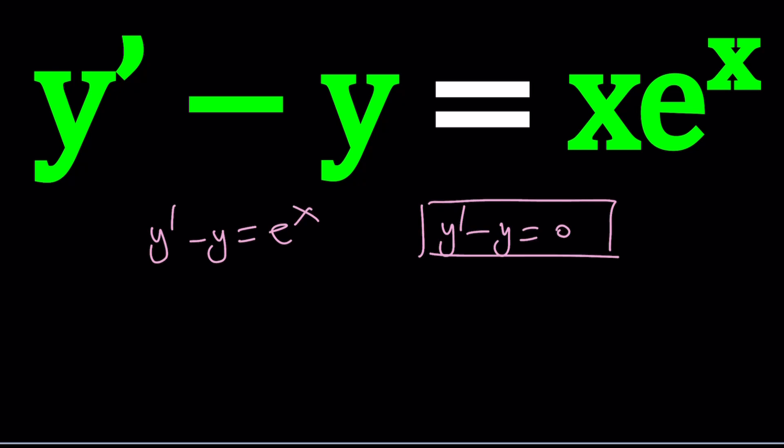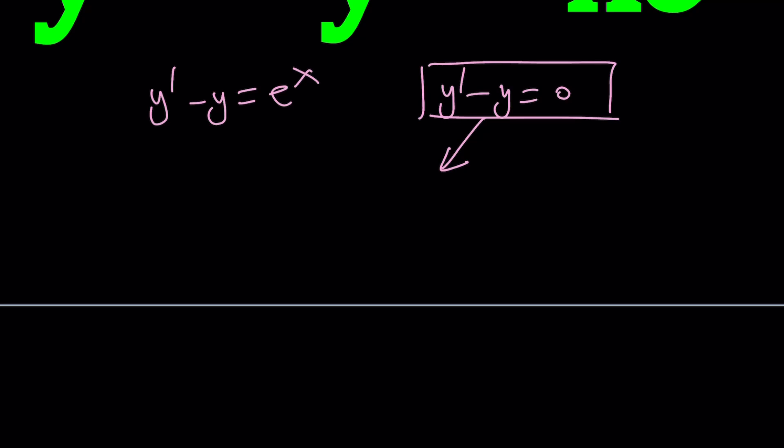Let's start with the homogeneous case. We have y' minus y equals 0. To solve this problem, the homogeneous case, we're going to assume that y can be written as e to the power rx. The reason we assume something like that is because if you have a polynomial equation with constant coefficients, you can pretty much assume this.